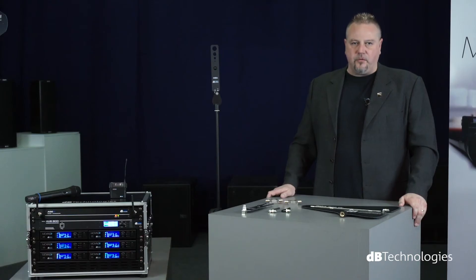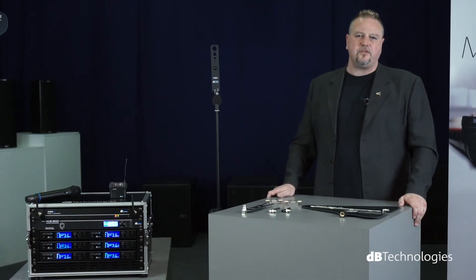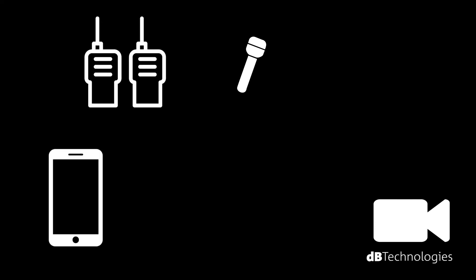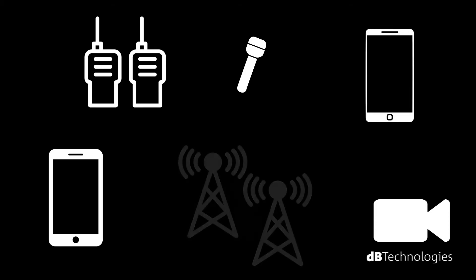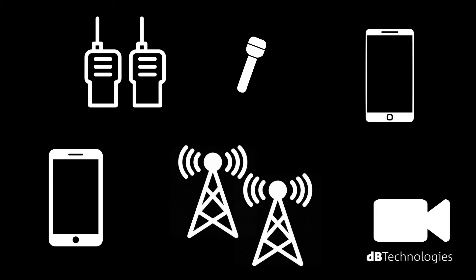In the wireless and broadcasting industries, all electronic systems generate interference in one way or another. For example, on live music stages, our system is used at the same time as others. Radio microphones, in-ear monitors, camera control systems, stage lighting and video screens may also cause interference to our system.